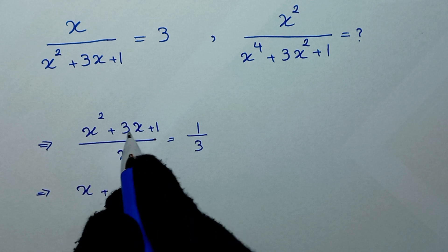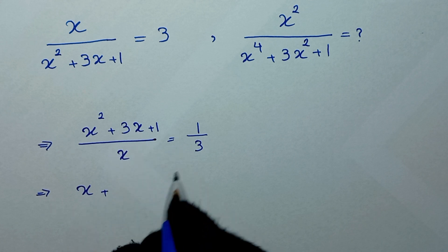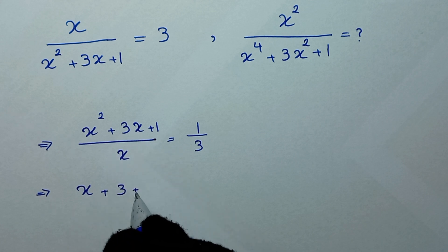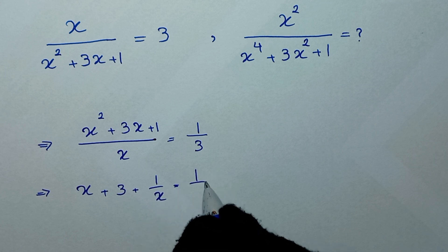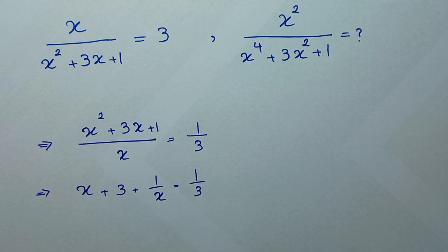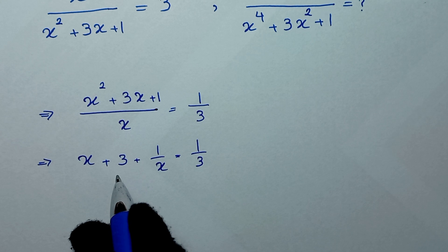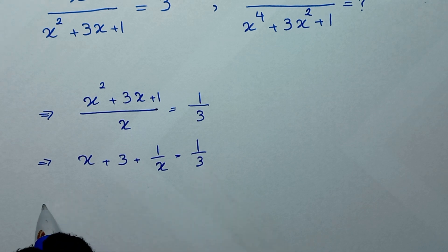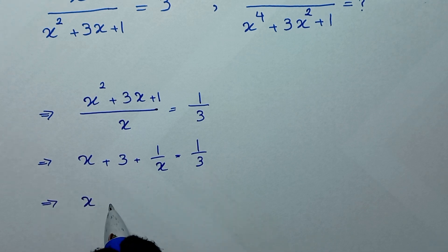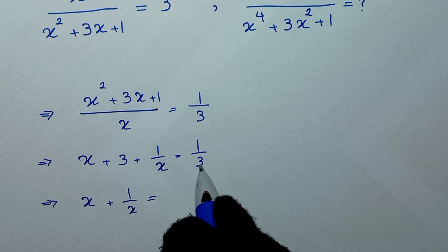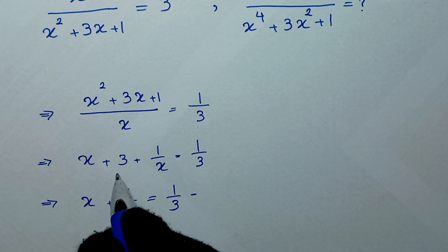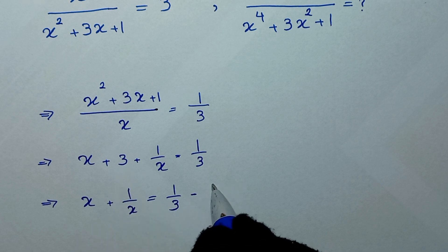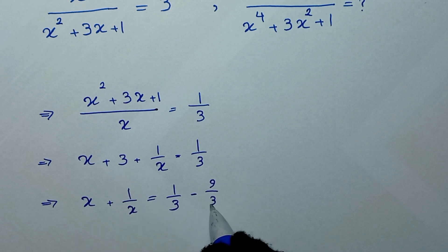This gives us x squared over x which is x, plus 3x over x which is 3, plus 1 over x, equal to 1 over 3. In the next step we move the 3 to the other side, giving x plus 1 over x equal to 1 over 3 minus 3, and we write 3 as 9 over 3.